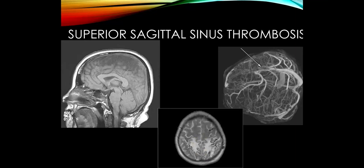We see areas of ischemia and hemorrhage along the midline with superior sagittal sinus thrombosis. This occurs more often in younger women; one common scenario is immediately after delivery when there is a hypercoagulable state and possible dehydration. It is treatable, and we will discuss it further in the stroke lecture.